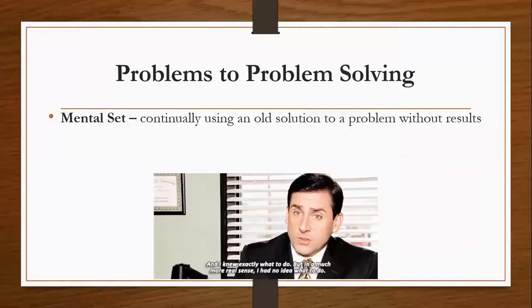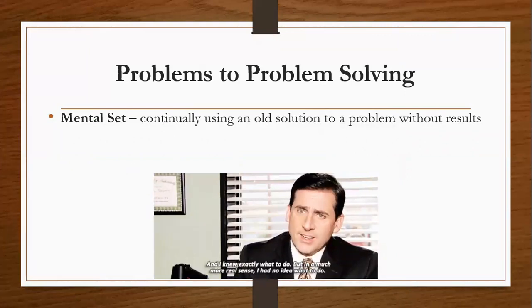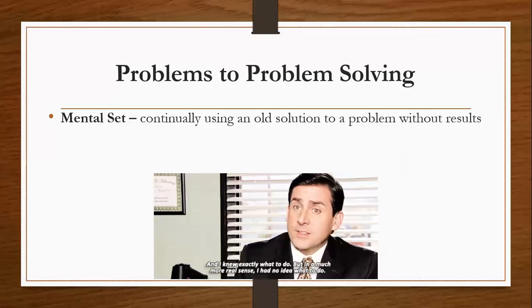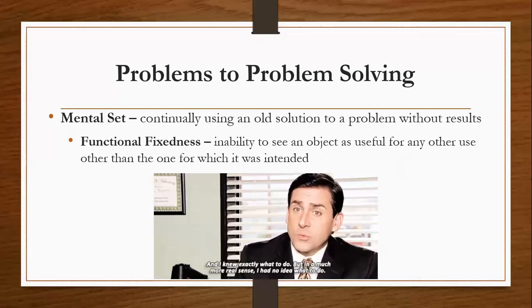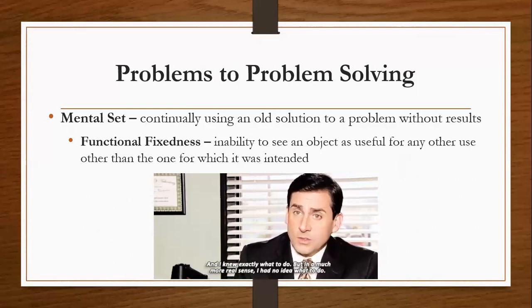Unfortunately, there are always some problems with problem-solving. One is when people engage in a mental set — continually using an old solution to a problem without results. After all, something that worked in the 90s may not work today. We sometimes see mental set when people engage in functional fixedness — the inability to see an object as useful for any use other than what it is intended for. So while SpongeBob is able to have a lot of fun with a box, Squidward is stuck in functional fixedness and just sees it as a useless box.